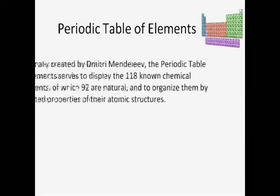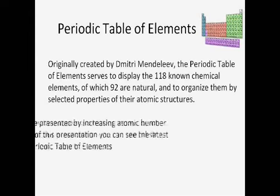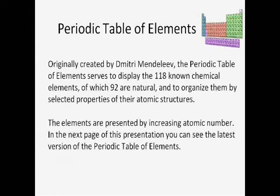The Periodic Table of Elements. Originally created by Dmitry Mendeleev, the Periodic Table of Elements serves to display the 118 known chemical elements, of which 92 are natural, and to organize them by selected properties of their atomic structures. The elements are presented by increasing atomic number. In the next page of this presentation, you can see the latest version of the Periodic Table of Elements.